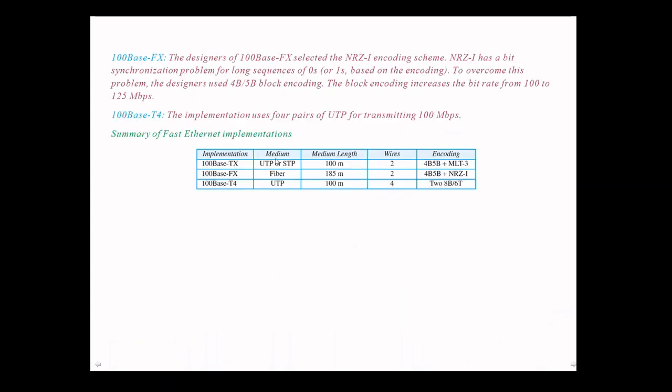We can see here the medium used, medium length, number of wires used, and the encoding schemes. For 100BaseTX and 100BaseFX, the medium length is 185 meters. For 100BaseT4, the medium length is 100 meters. In 100BaseTX, the medium may be unshielded or shielded twisted pair cables. In 100BaseFX, fiber cables were used. In 100BaseT4, unshielded twisted pair cables were used, with the number of cables ranging from two to four and various encoding schemes.